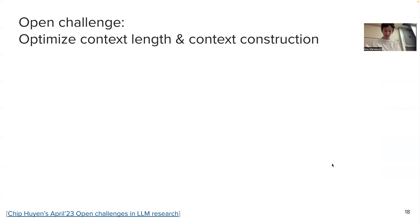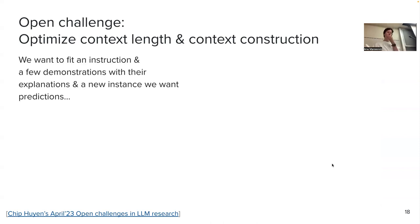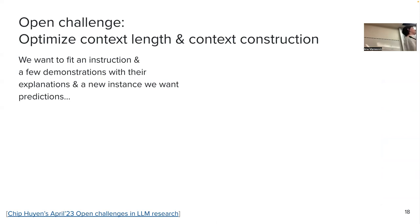Now that our context is becoming longer, we want to fit an instruction and a few demonstrations. What if the demonstration is a summarization — we have a very long document and can fit only 2,000 or 4,000 tokens with open source models? That's not really a lot. You can't put many demonstrations there if your article is really long.